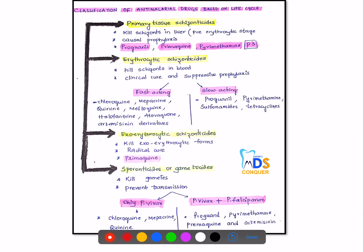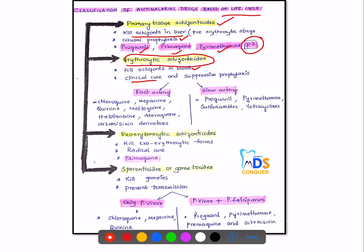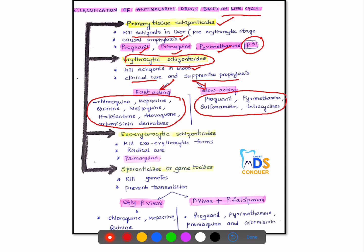This is the classification of drugs based on the life cycle. Primary tissue schizonticidal drugs kill schizonts in the liver and are mostly used for causal prophylaxis; the mnemonic is P3 — proguanil, primaquine, and pyrimethamine. The second category, erythrocytic schizonticidal drugs, kill schizonts in the blood and are used for clinical cure and suppressive prophylaxis, divided into fast-acting and slow-acting types. Exoerythrocytic schizonticidal drugs kill exoerythrocytic forms and are used for radical cure; the example is primaquine.